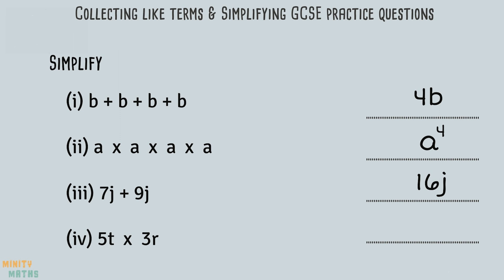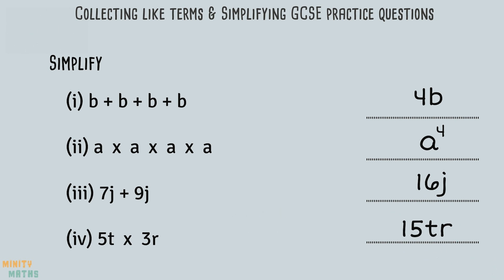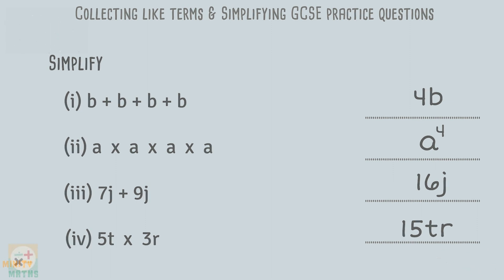Question four asks us to multiply 5t by 3r. Even though these are not like terms as the variables t and r are different, we can still multiply them together. First we multiply the coefficients together giving us 15. Multiplying t by r means we have tr, so we therefore have 15tr. We have successfully simplified all of the expressions — thanks for watching and good luck in your exams.